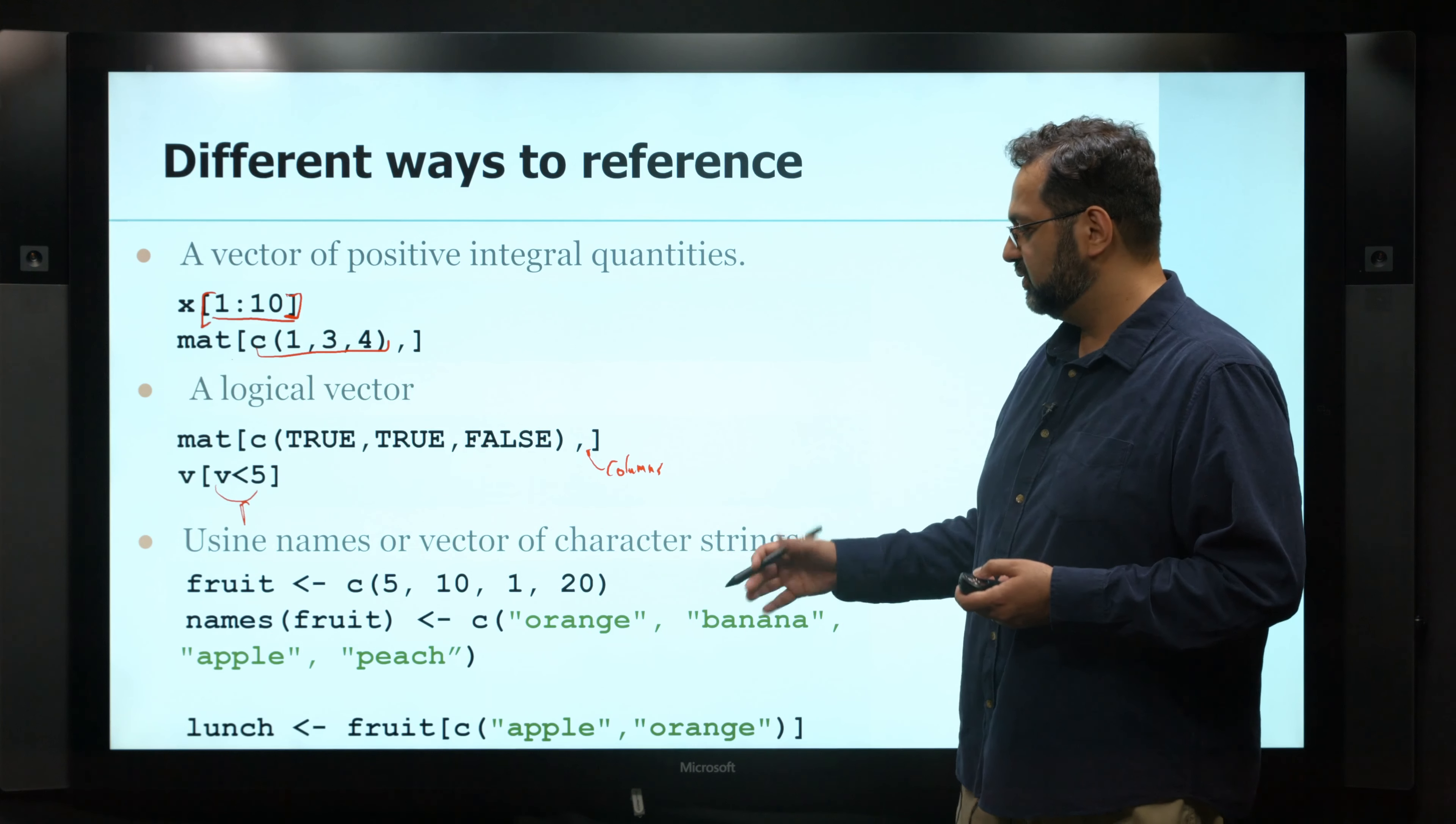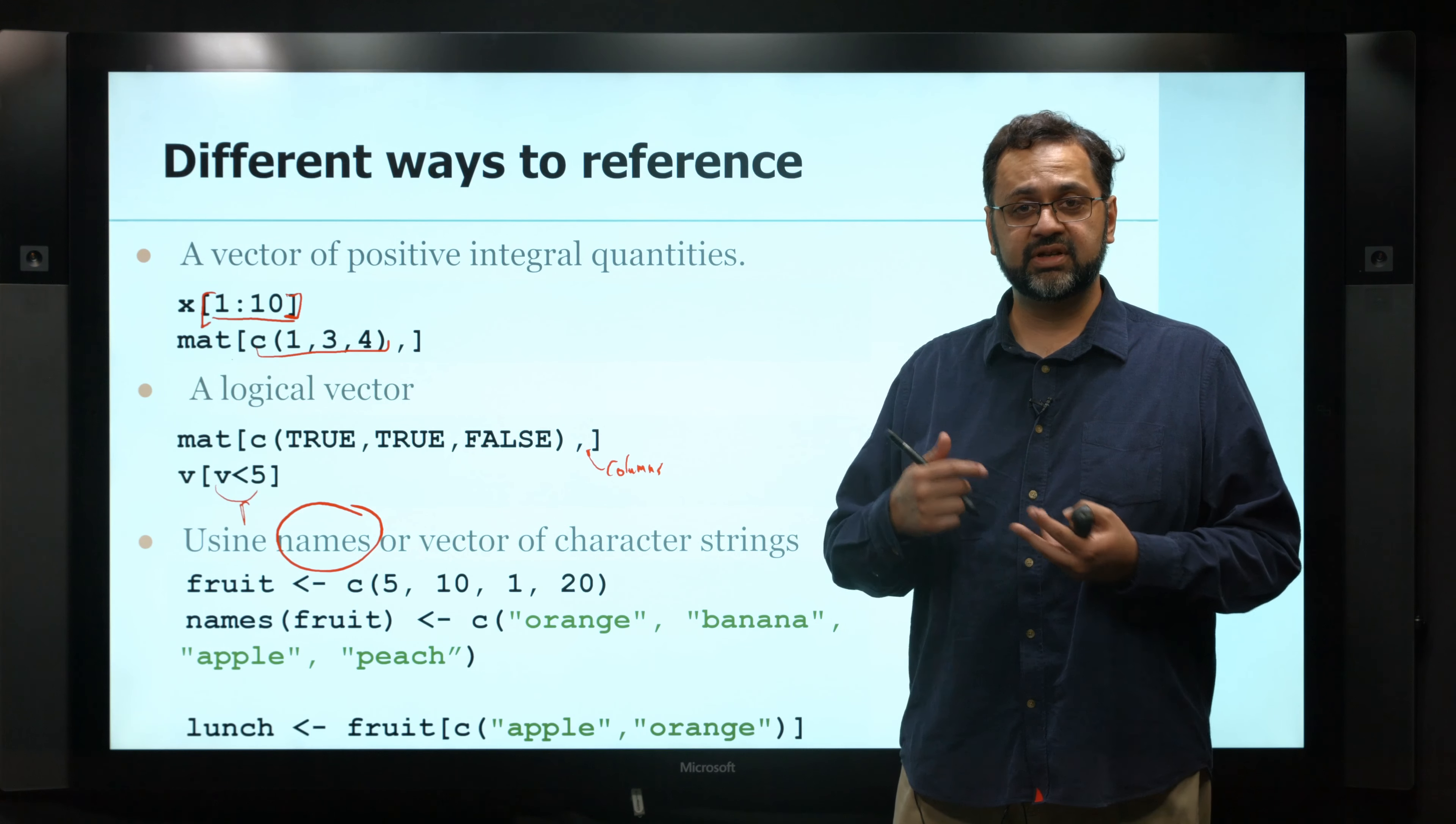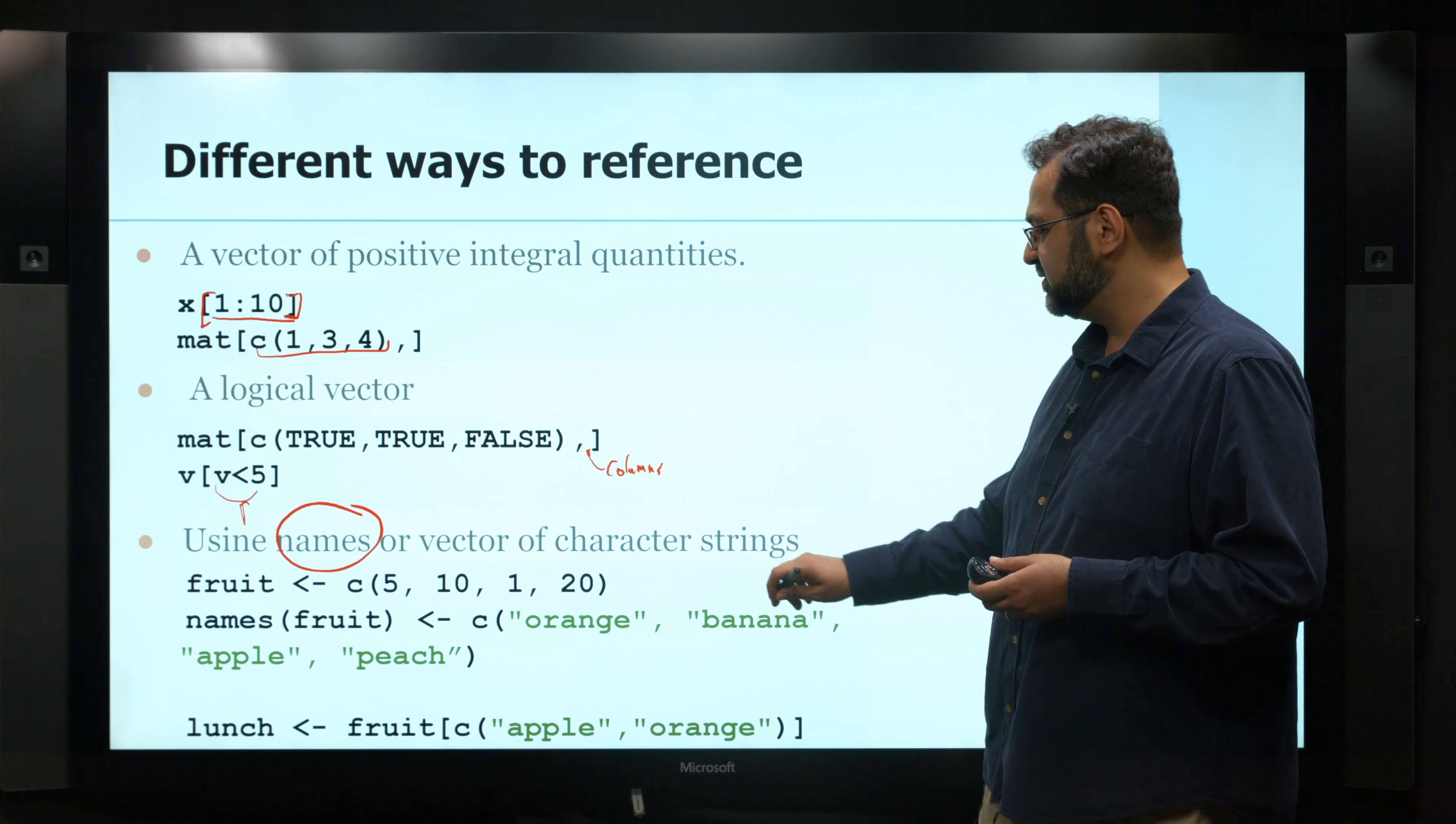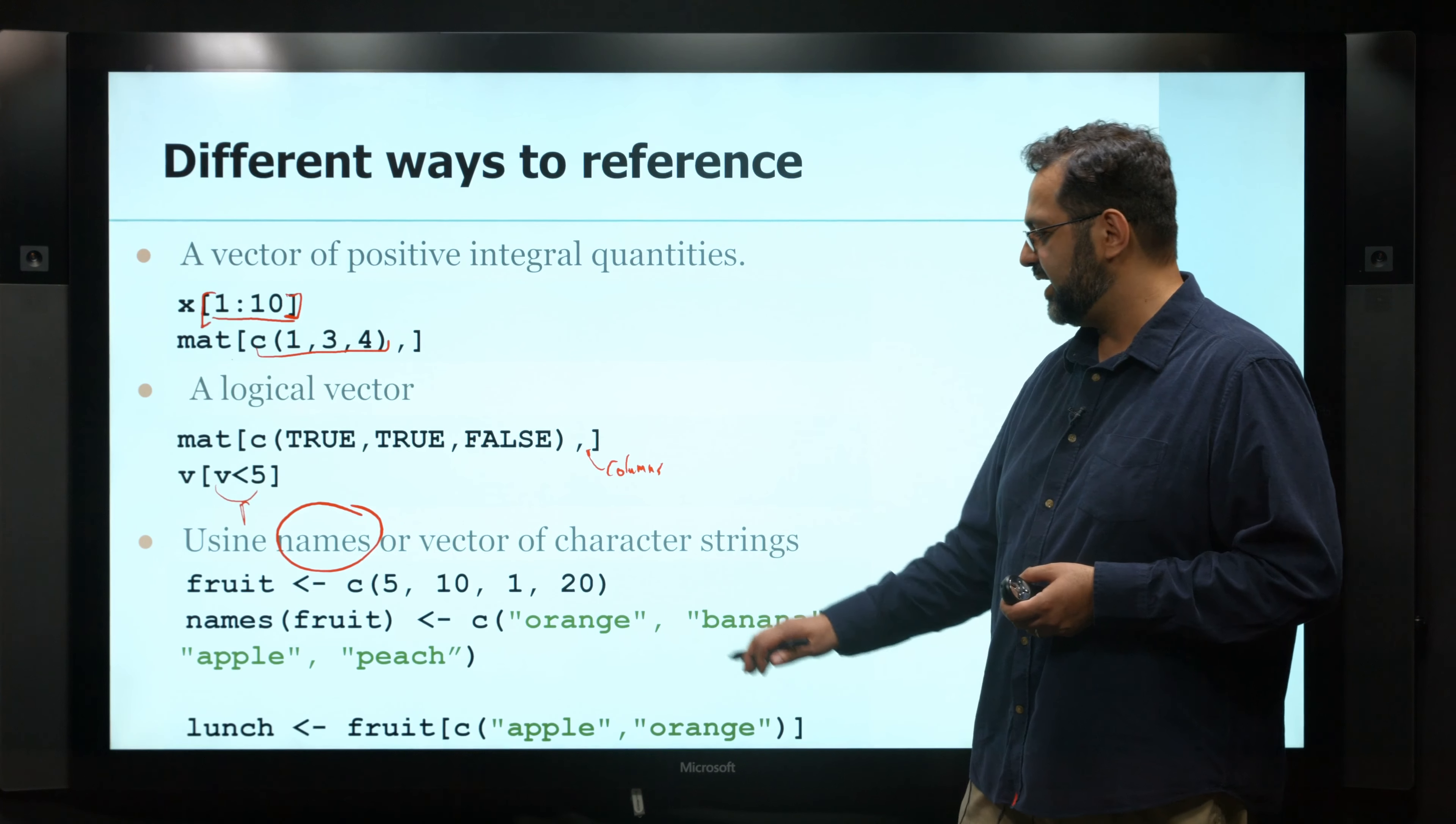And finally, another way of getting information out is by using names. So we can actually create names or labels on our data. So if we have a vector or a matrix, we can give it names for a specific values, a position in the vector, or we can give it the row names and column names for our matrix and data frames. So in this case, we have a vector called fruit with all these values. I've given it names by using this function here, and the names are orange, banana, apple, and peach.